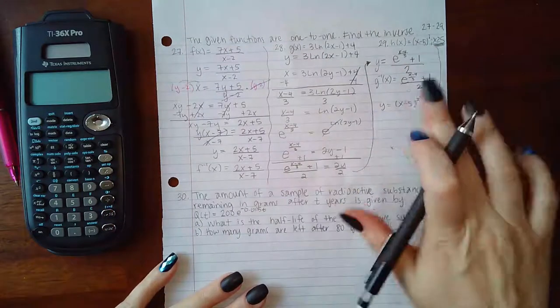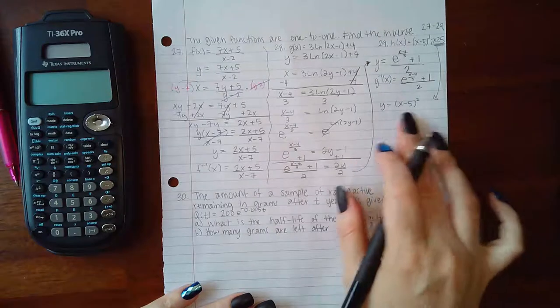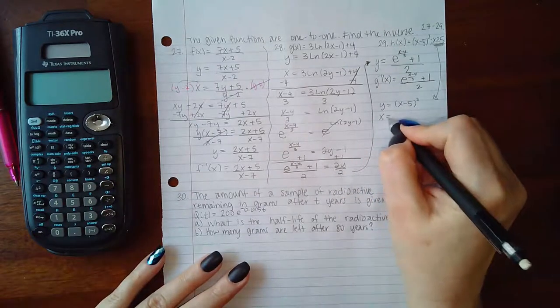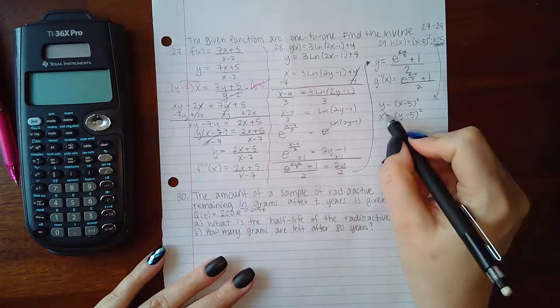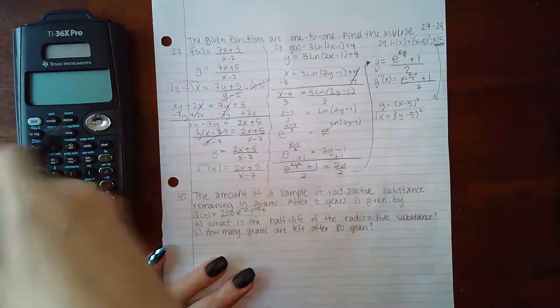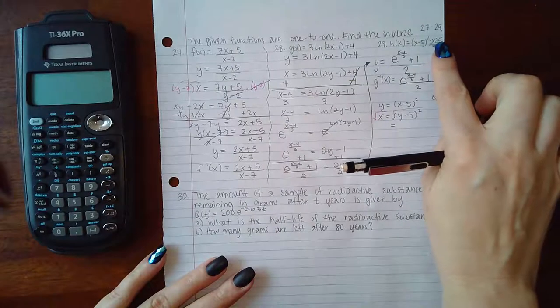Because typically a square function is a parabola and a parabola is not one-to-one, so we're only going to consider half of the parabola as far as the graph is concerned. But algebraically we're just dealing with the function, so we're going to interchange the x and y's and then we're going to solve for y.